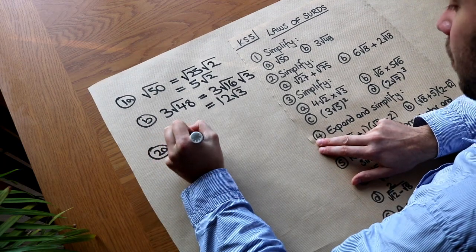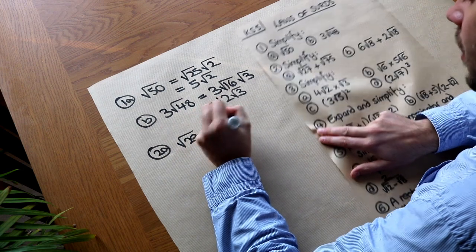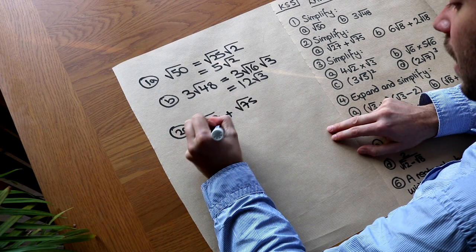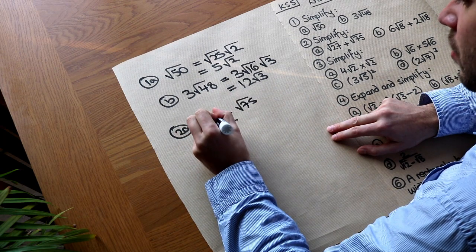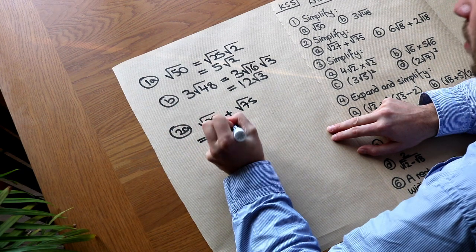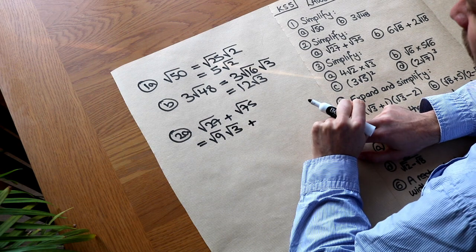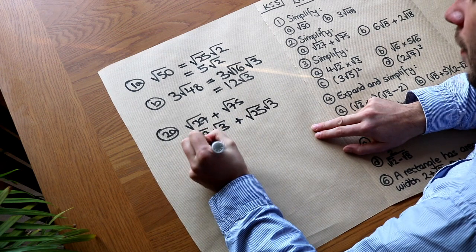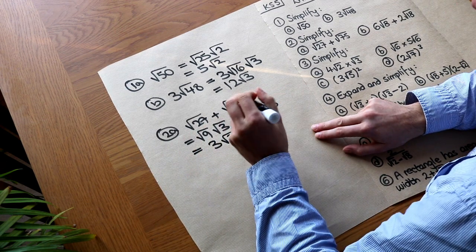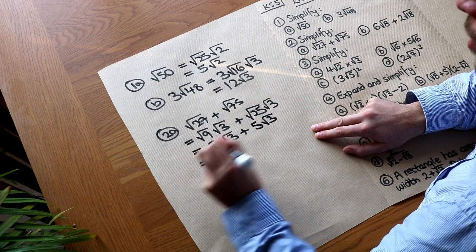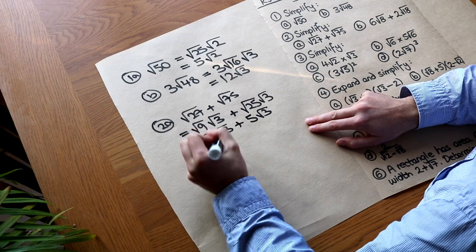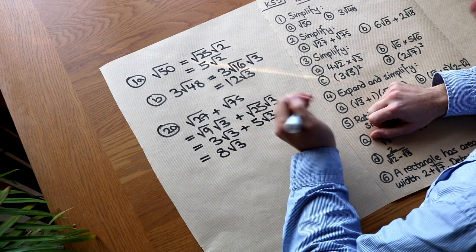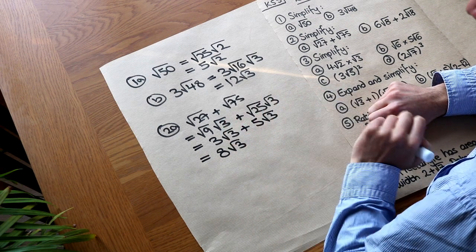For root 27 plus root 75, we first simplify each one. The biggest square factor of 27 is 9, so root 27 is root 9 times root 3, which is 3 root 3. The biggest square factor of 75 is 25, so root 75 is root 25 times root 3, which is 5 root 3. Now if we have 3 lots of root 3 and add 5 lots of root 3, we have 8 root 3 — just like 3x plus 5x is 8x, replacing x with root 3.